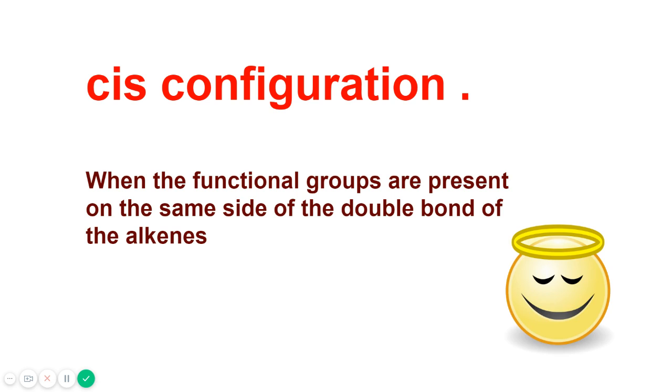When the functional groups are present on the same side of the double bond of the alkenes, it's cis configuration. So functional groups, they are on the same side.